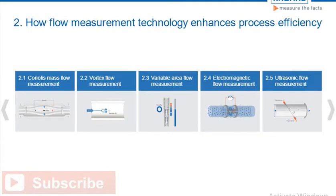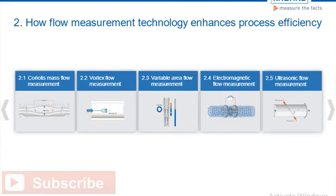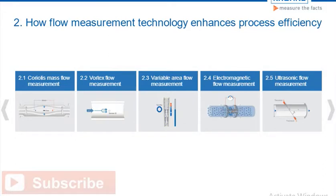Flow measurement is crucial to any sort of industrial process that includes liquids, gases, or steam. Think of water supply and wastewater, the oil and gas industry, or the production of food and beverages. Five types of flow measurement principles cater for the specific needs of the industries. By walking through the following sections, you will learn how these help increase process efficiency in some of their key application areas. As you return to this page, you can select another measurement technology.